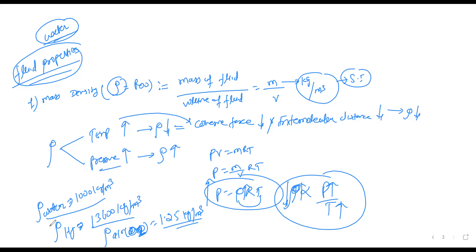That's why the density of mercury is 13,600 kg/m³ — it has the highest density. So remember the mercury density, water density, and the air density.